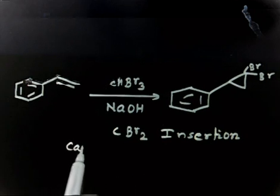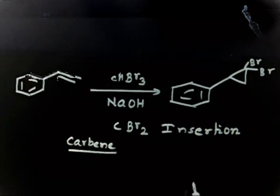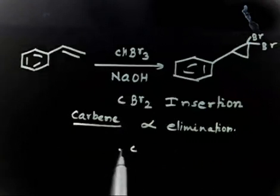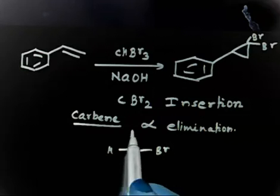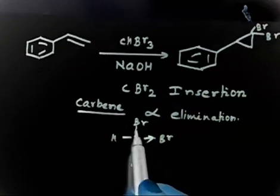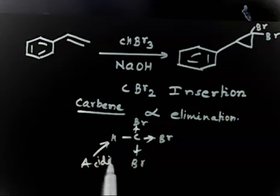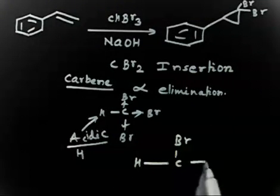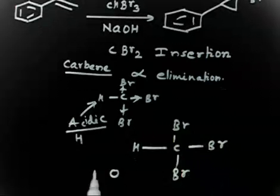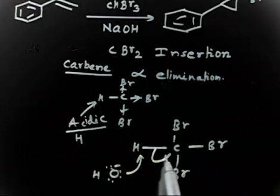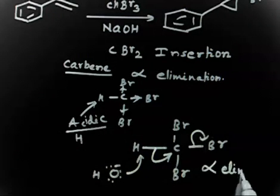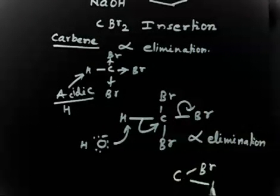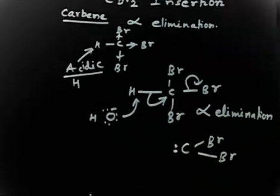Now how can I add CBr2? I have to form a carbene, and that is easy — I can do alpha elimination. In the case of CHBr3 we can easily do alpha elimination because this hydrogen is very acidic, since there are three bromines pulling electrons. So this hydrogen is basically very acidic. I can easily take this H⁺ — the base OH⁻ takes this H⁺, and at the same time the electrons shift, giving alpha elimination and generating the CBr2 carbene.